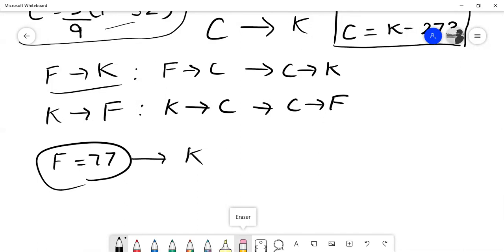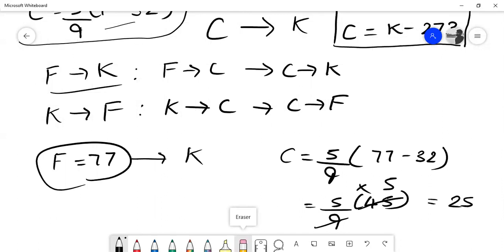They're asking us to convert Fahrenheit. So we'll do Celsius is equal to 5 by 9, F, that is 77 minus 32. I got 45. 5, 9, 45, okay? 9 ka table, if you know it, you can quickly do it. 9 times 5 is 45. 5 into 5, so you get 25, okay? Celsius ki value kya hai? 25, right. The value of Celsius is 25.